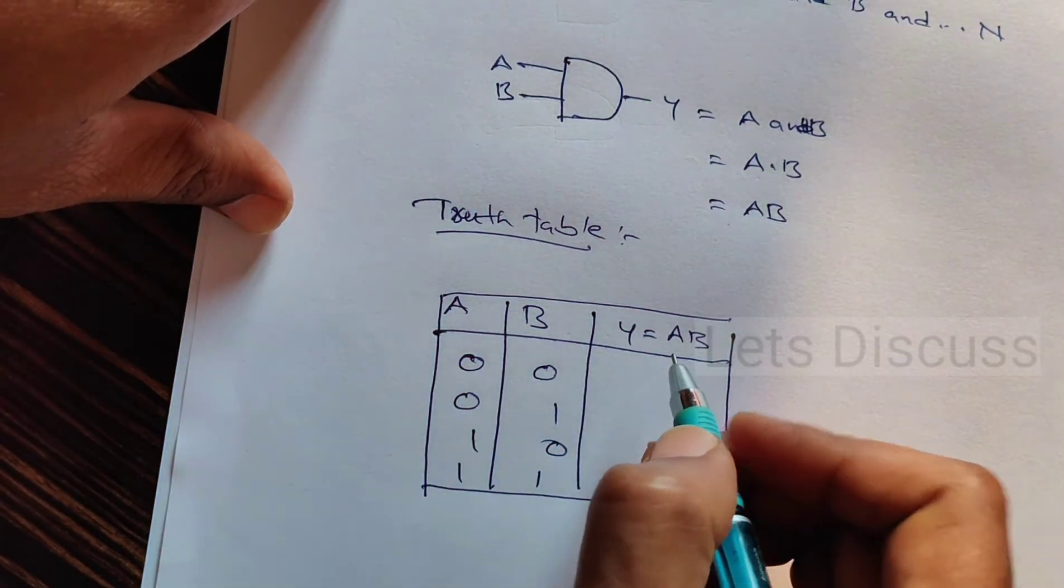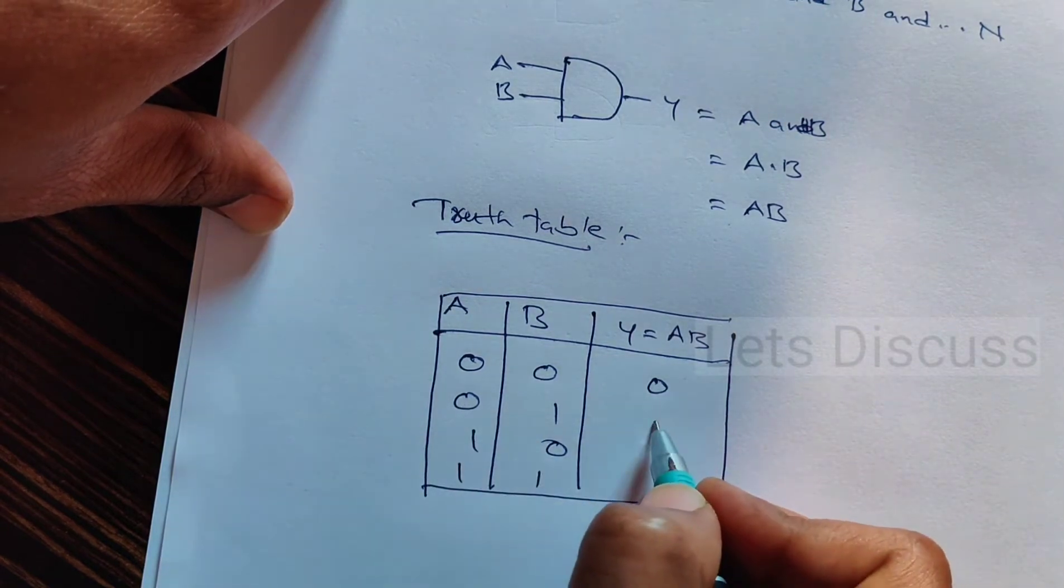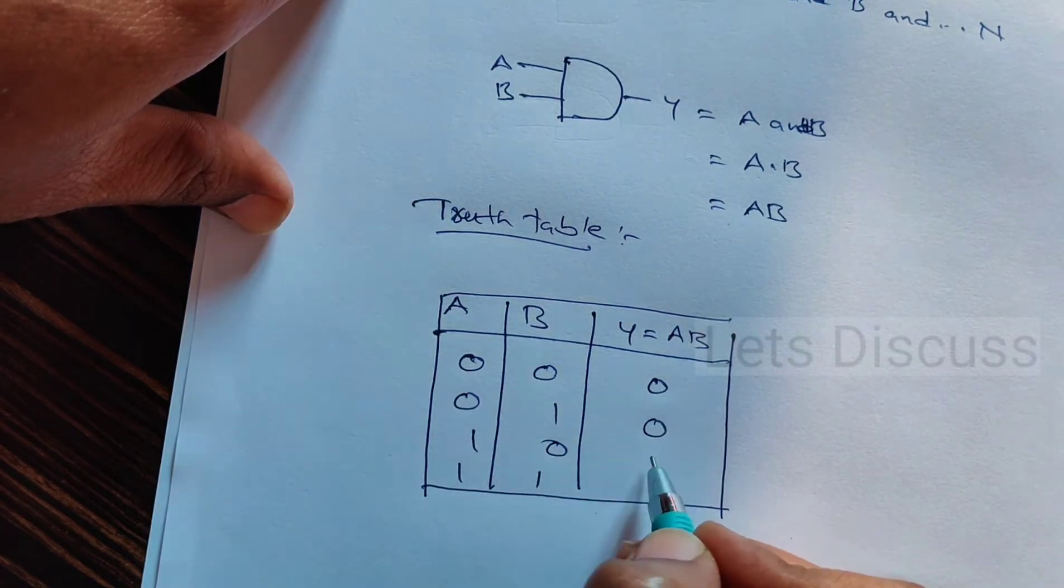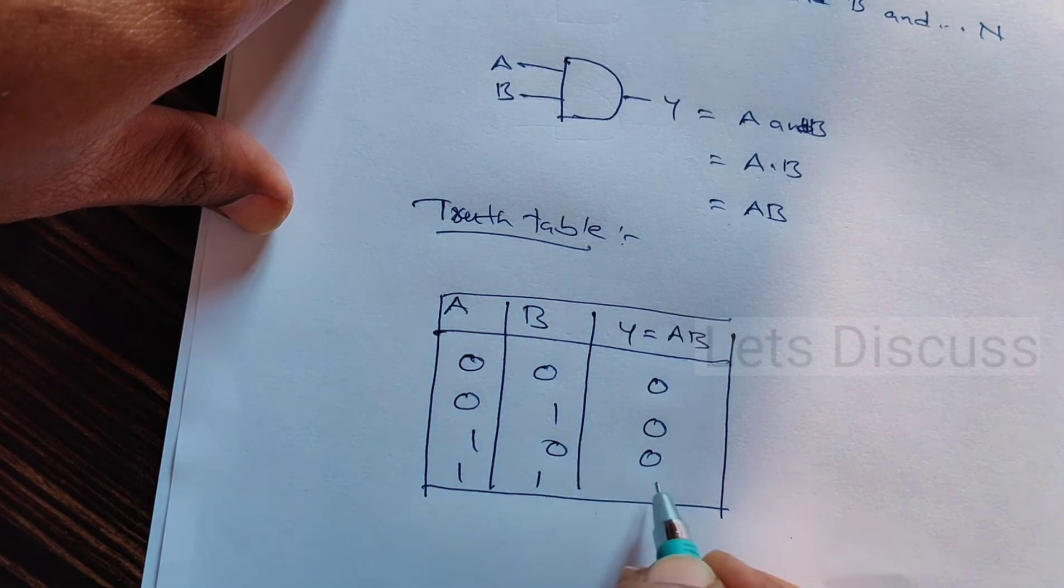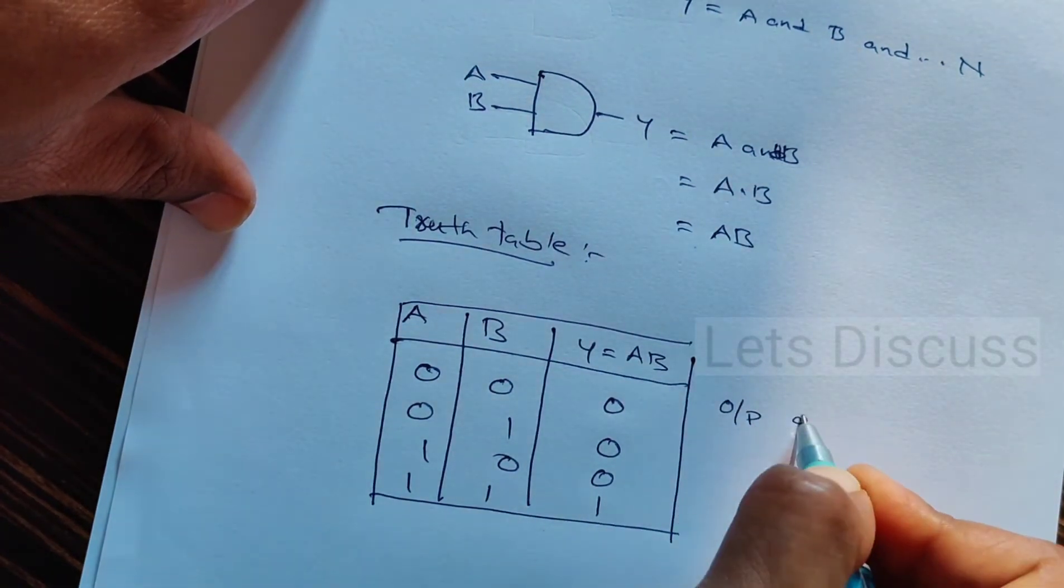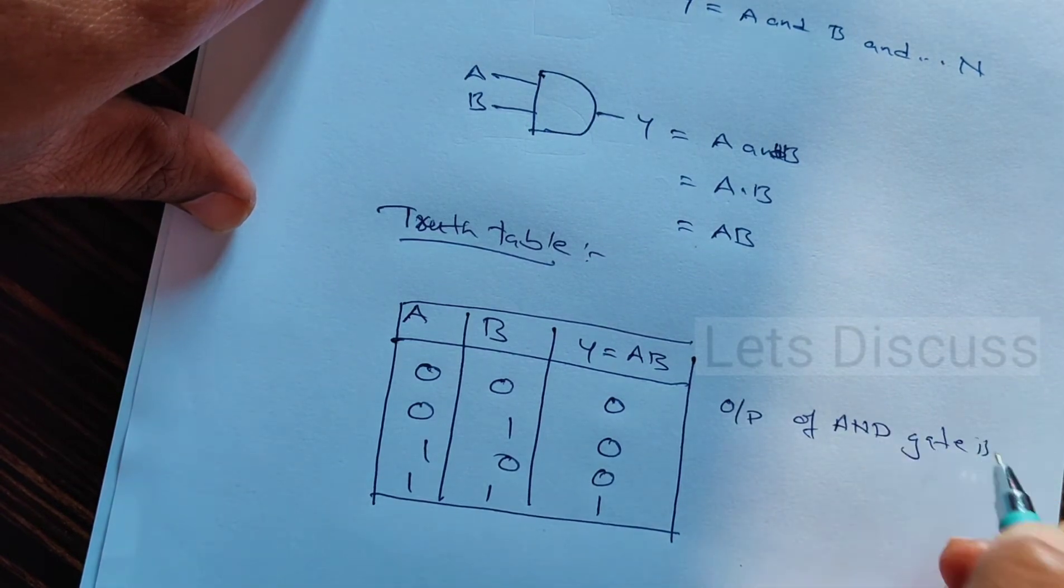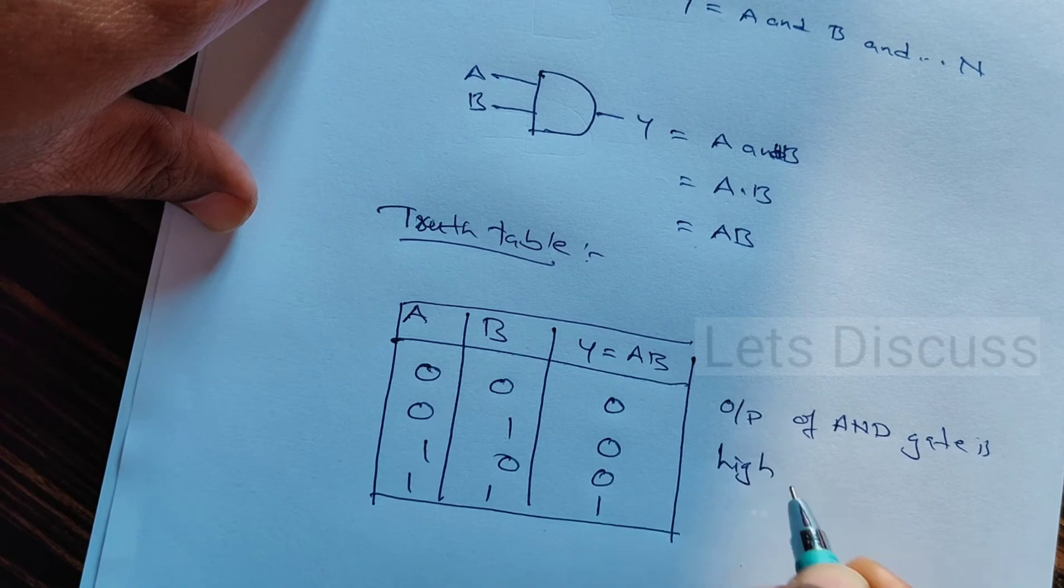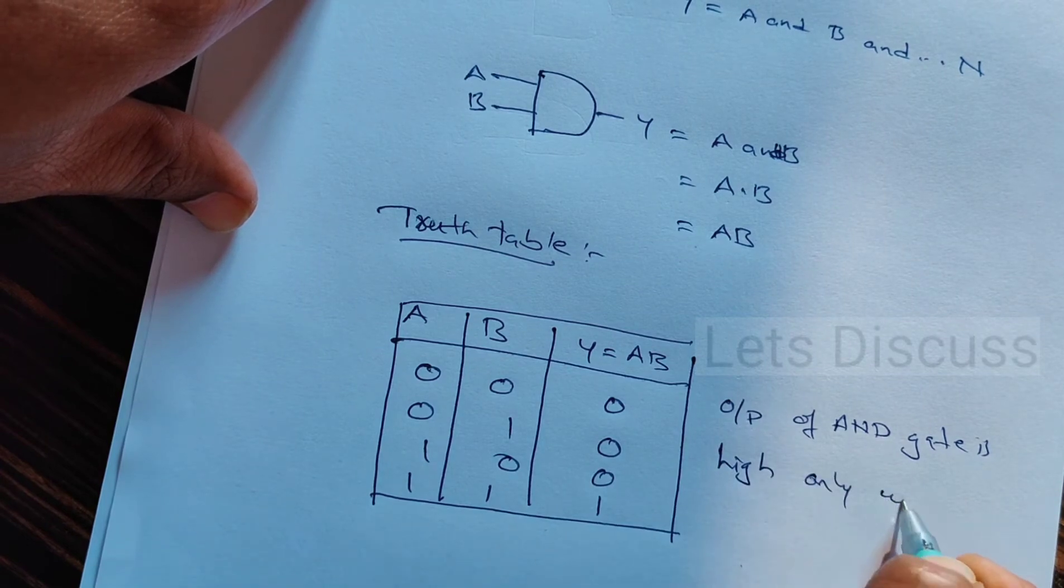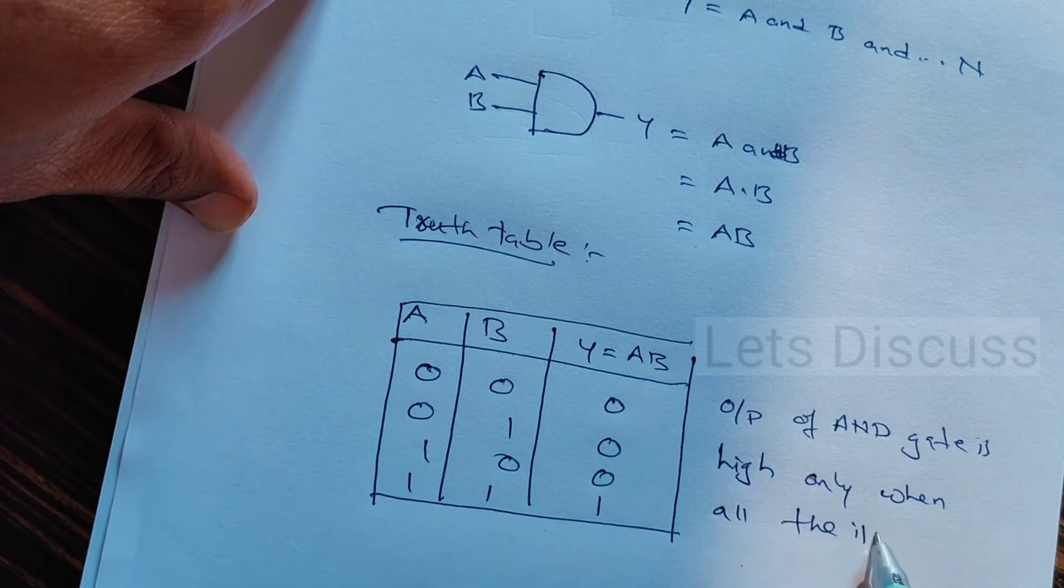Output: when the first set of inputs is 0 0, the output of the AND gate is 0. For 0 1, it's 0. For 1 0, it's 0. For 1 1, it's 1. The output of the AND gate is high only when all inputs are high.